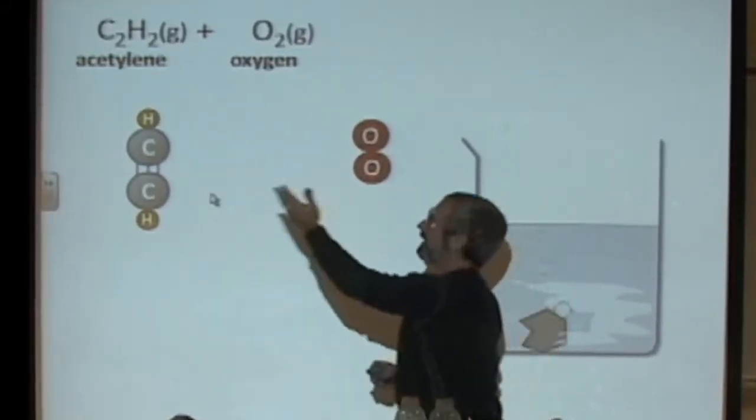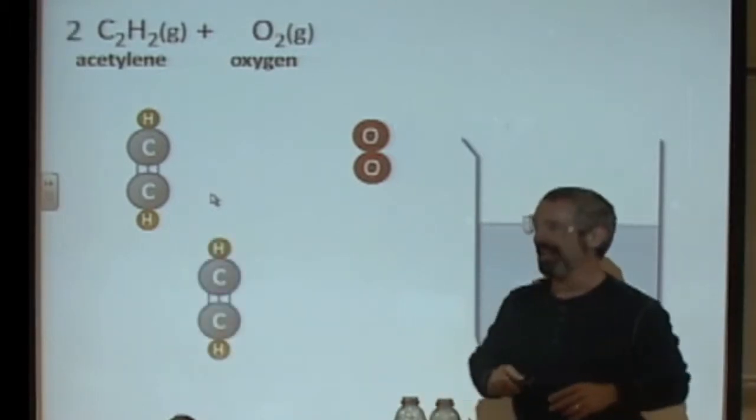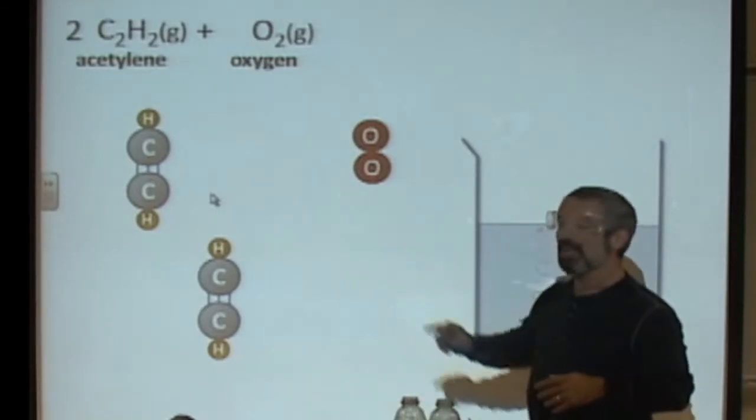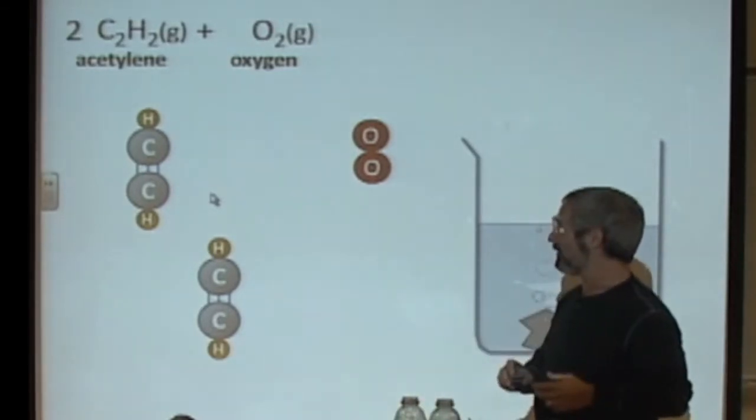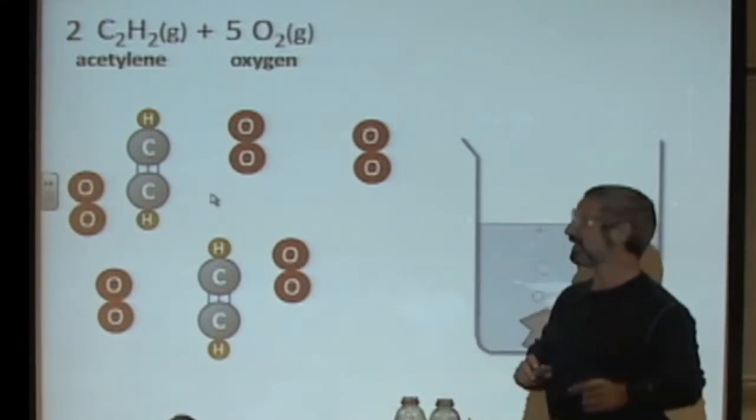So, there's the reaction. Acetylene reacting with oxygen gas. Oxygen is O2. It's diatomic. Now, to balance this equation, it's going to take more than just a simple ratio. It's to create two acetylene molecules and a total of, that's right, five oxygens. Check this out.